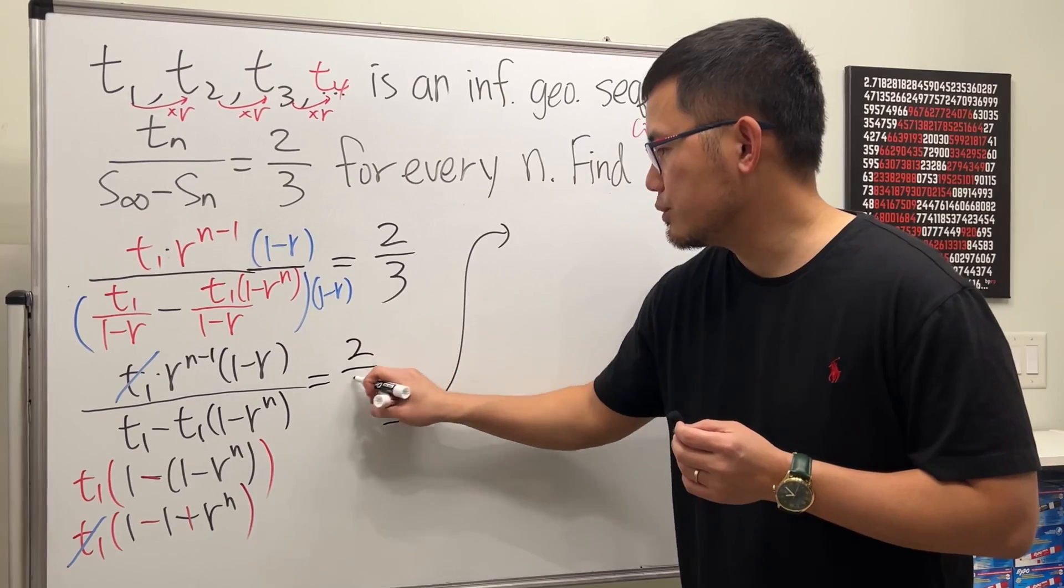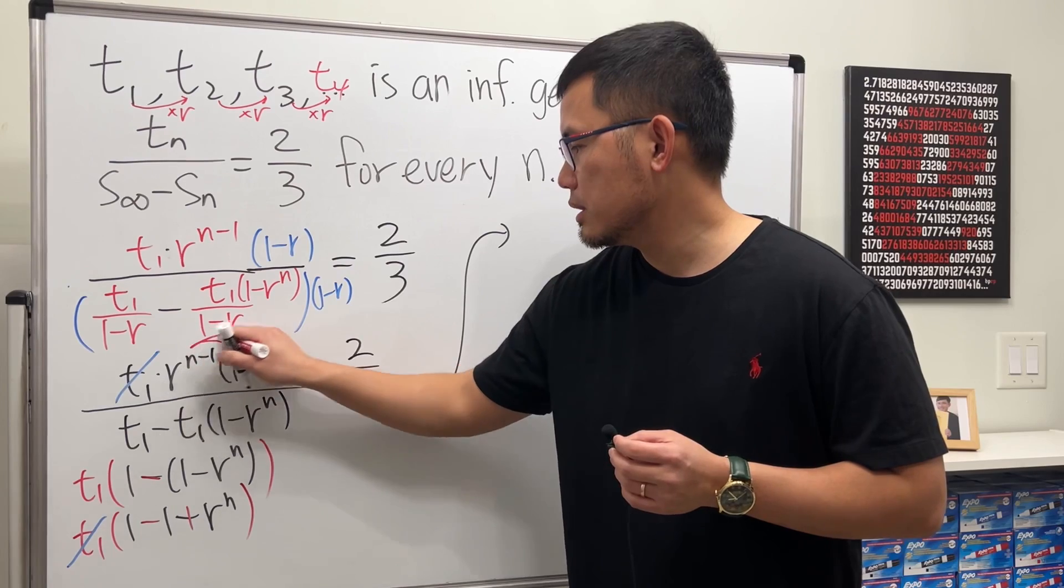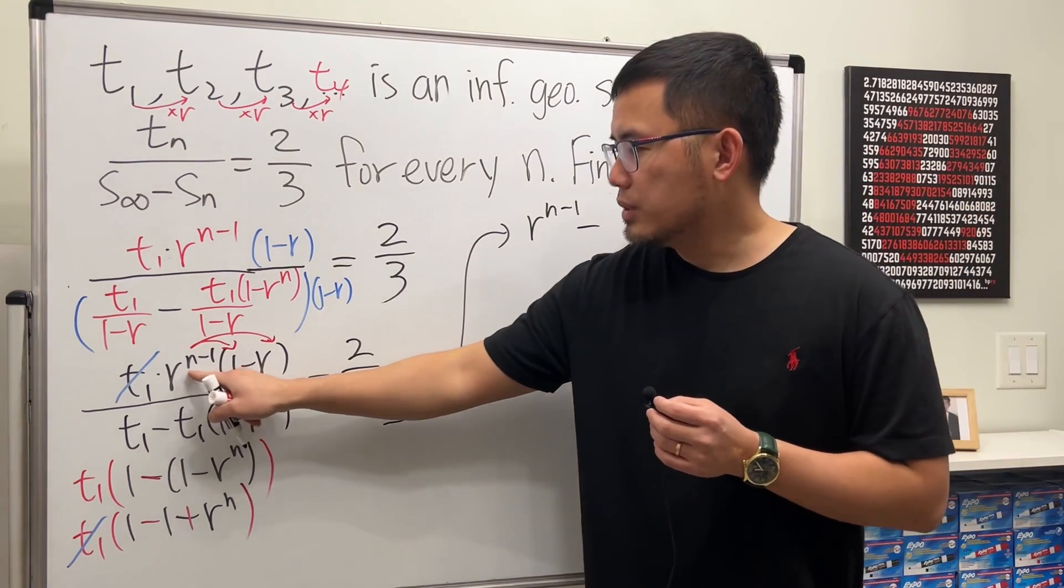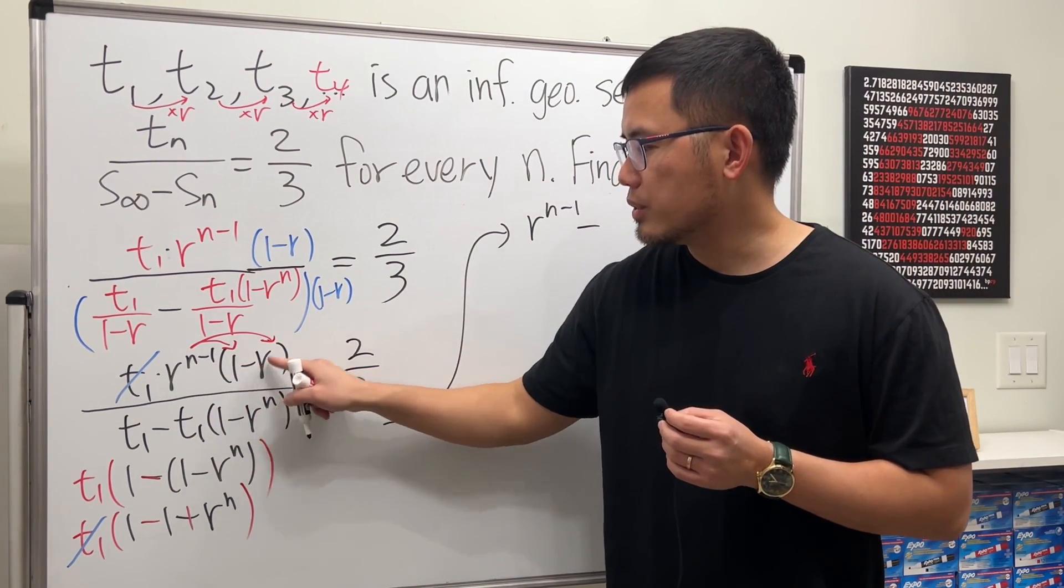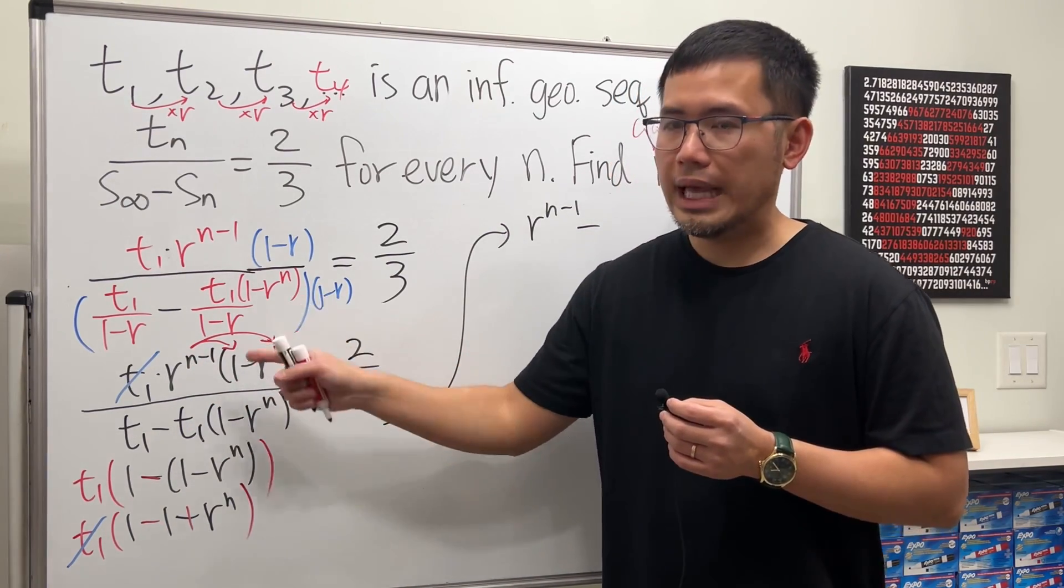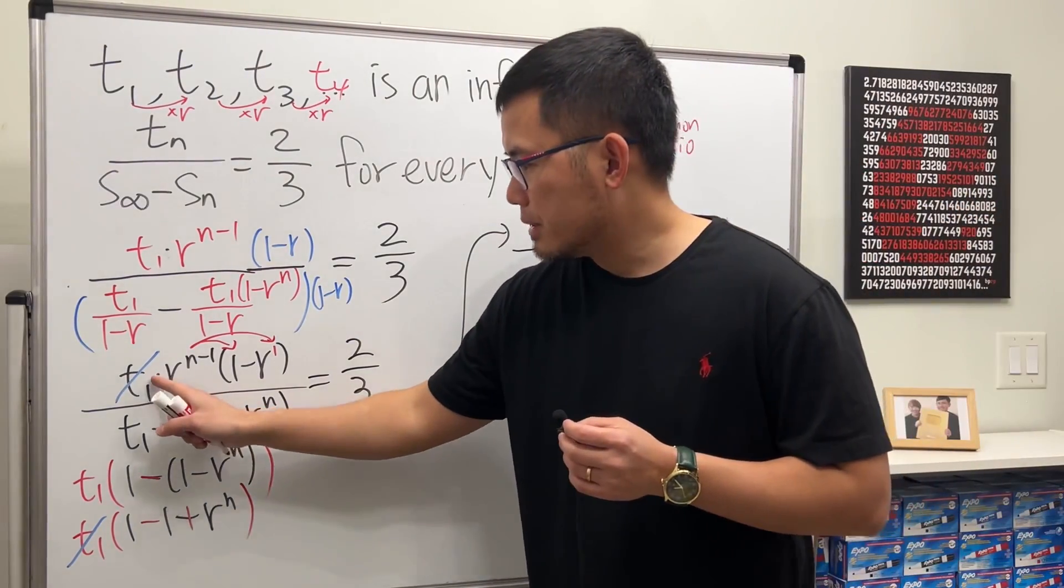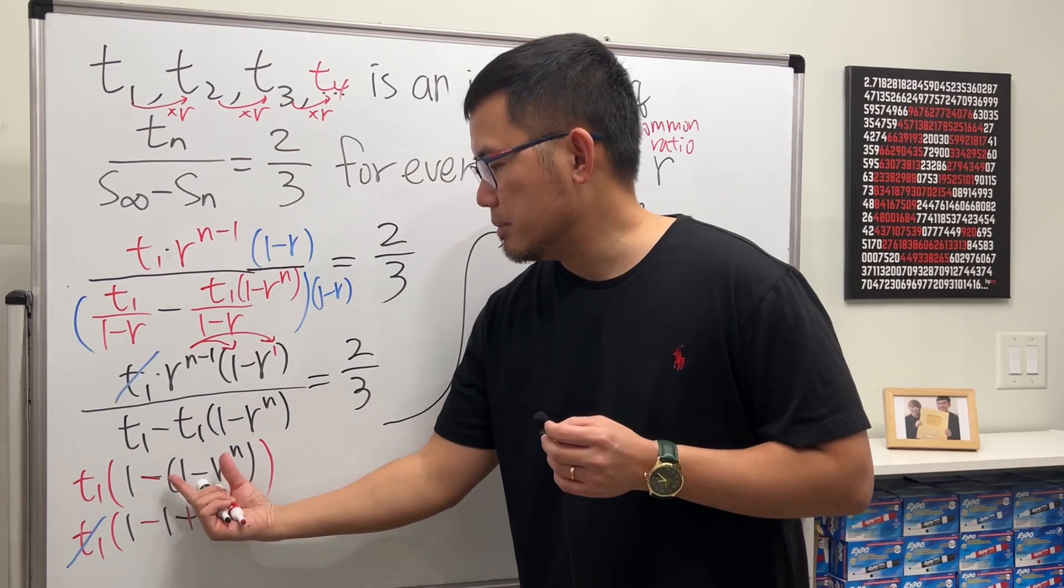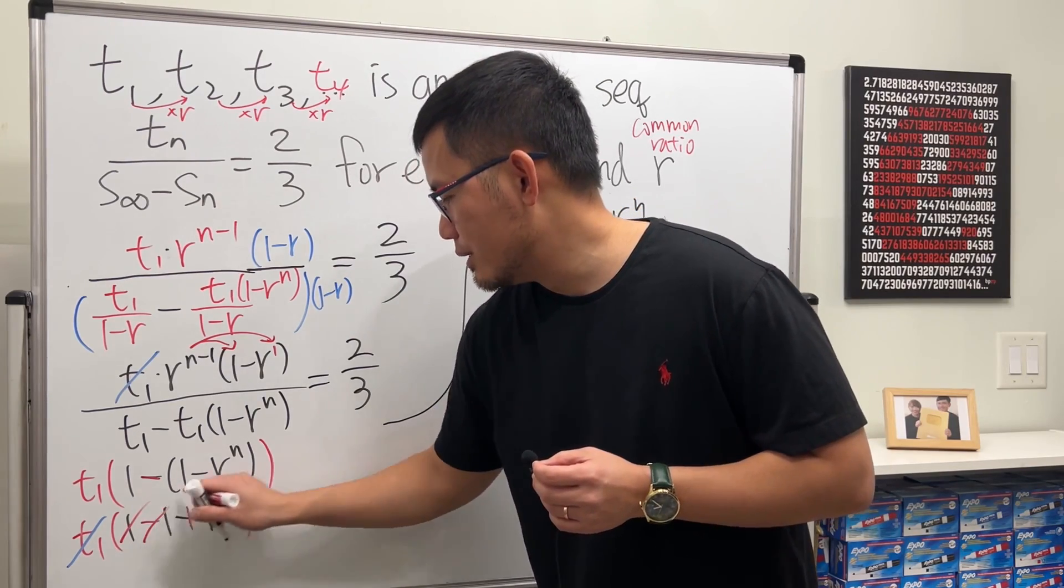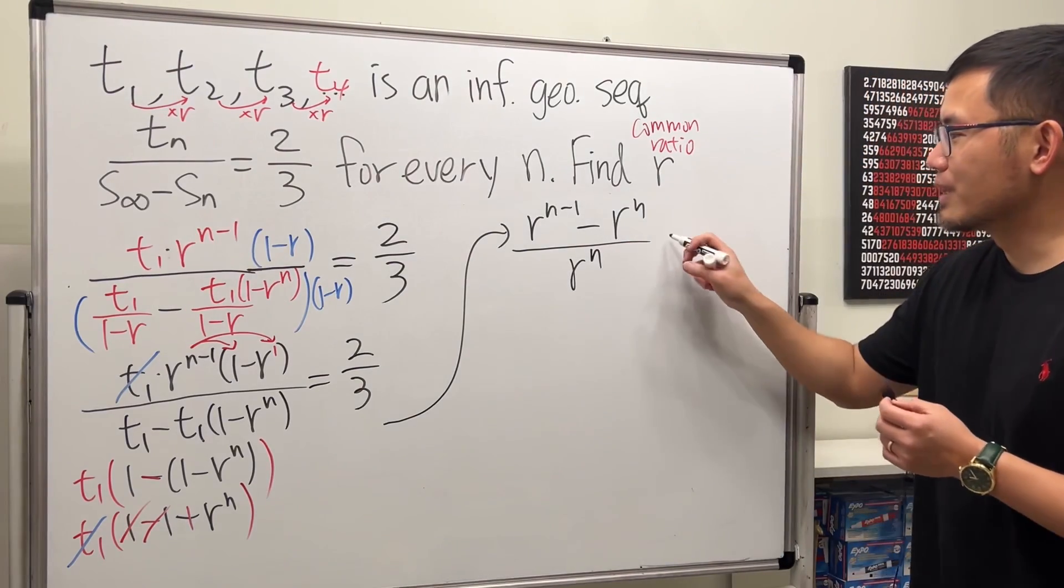And let me write that down right here. And of course, this is still equal to 2 over 3. The top is just this times that, so perhaps I will distribute. So we get r to the n minus 1 minus r to the n minus 1 times r to the first power. You add exponents. n minus 1 plus 1 is just n. So it's r to the n over... Remember, this and that cancel. This is just an intermediate step. So we just have this right here. But, 1 minus 1 is also, you know, canceled. So we just have r to the n on the bottom. And then, we will get 2 over 3.